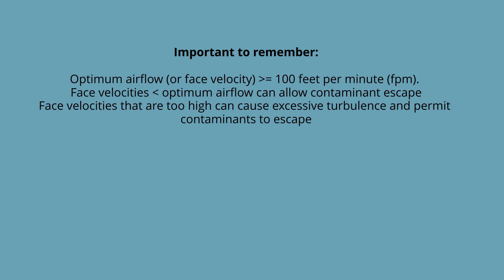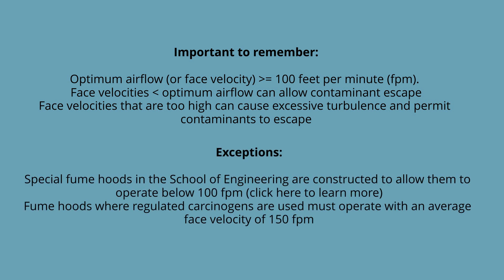The optimum fume hood face velocity is no less than 100 feet per minute. Face velocities below the optimum can potentially allow hazardous substances to escape out of the fume hood. Face velocities that are too high, usually above 175 feet per minute, can also be problematic since they can cause excessive turbulence and allow hazardous substances to escape. Low-flow, high-efficiency fume hoods installed in some labs in the School of Engineering are allowed to operate below 100 feet per minute, but not less than 80 feet per minute. Fume hoods where regulated carcinogens are used must operate with an average face velocity of 150 feet per minute. Perchloric acid hoods are generally operated with an average face velocity of 125 feet per minute.